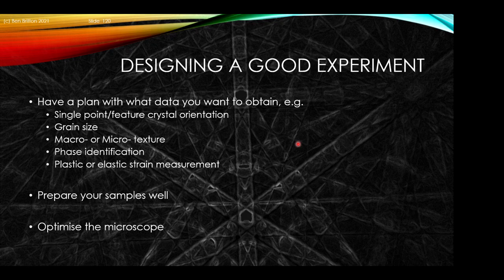If you're doing texture, are you doing macro — so the average texture across the object — or are you doing micro, so a specific domain or cluster of phases? Or maybe it's the recrystallization grains that you care about. Do you want to identify or classify the particular phases? Would you like to understand something about the strain in the system? If you've got a good idea about what you want to do — and there are many more experiments that can be done — the next thing you want to do is to prepare your samples well.